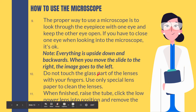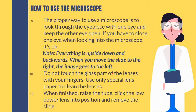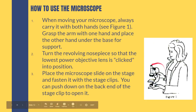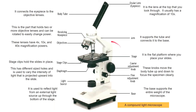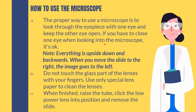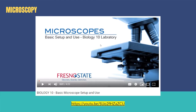Look through the eyepiece with one eye and keep the other eye open — both eyes should be open to reduce eye strain. Do not touch the lens surfaces with your fingers, as fingerprints can damage the lens. When finished, return the microscope to its resting position. To familiarize yourself with using a microscope, I recommend watching the video from Fresno State entitled 'Biology 10 Basic Microscope Setup and Use' — link in the description below.